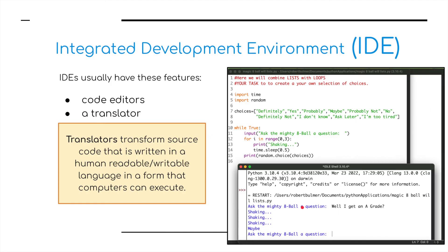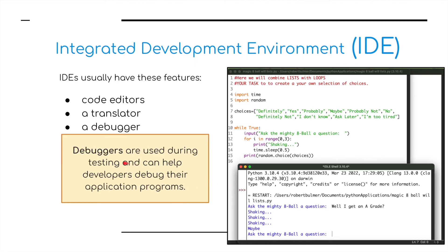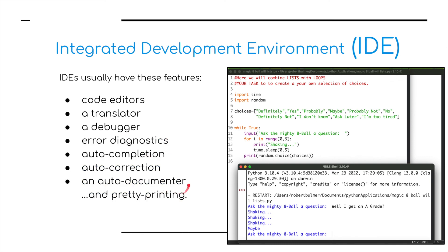A translator transforms source code written in a human-readable, writable language into a form that the computer can read and execute. A debugger is used during testing and helps developers debug their application programs. And finally, pretty printing is where everything is color-coded so it is easy to follow and understand.